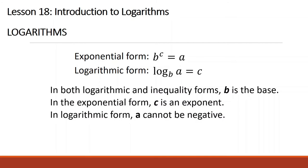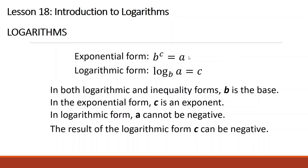In logarithmic form, a cannot be negative — I repeat, a cannot be negative. This is because the range of an exponential function goes from 0 (not including 0) to positive infinity, so the result will always be a positive number. The result of the logarithmic form, c, however, can be negative. Why? Because in exponential form, we can have a negative exponent, and the result will just be the reciprocal of the base.